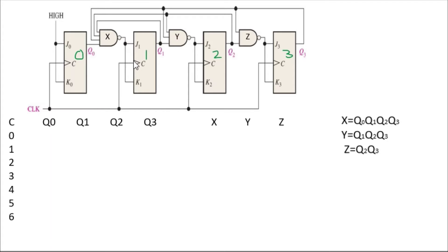J1 and K1 are provided through NAND gate X, which has inputs q0, q1, q2, and q3. NAND gate Y has only q1, q2, and q3 — no q0. NAND gate Z has only q2 and q3. I've written this to make the process simpler. Initially all the inputs are zero.